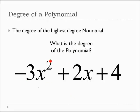Well, this monomial right here has a squared. This one has a 1st power, and this is a 0. So, this is a 2nd degree polynomial, or a quadratic.